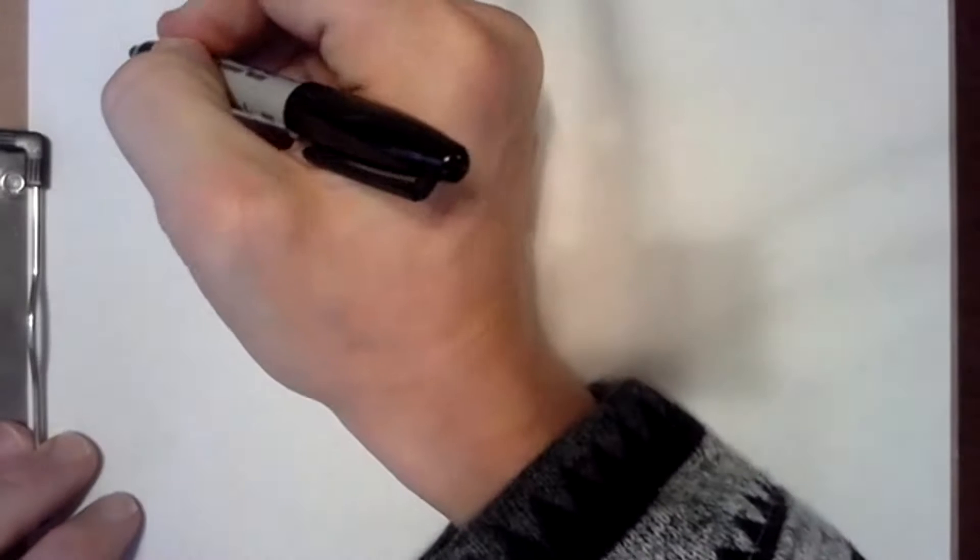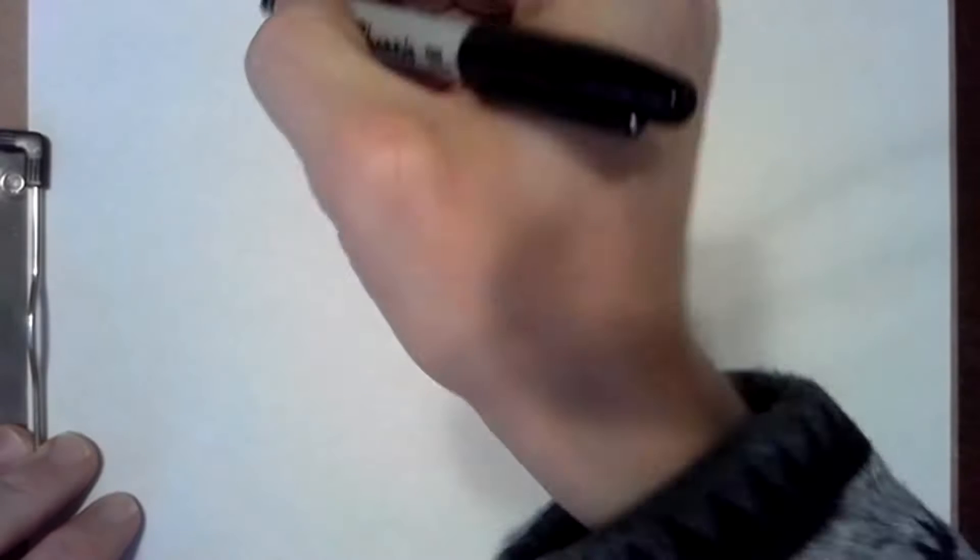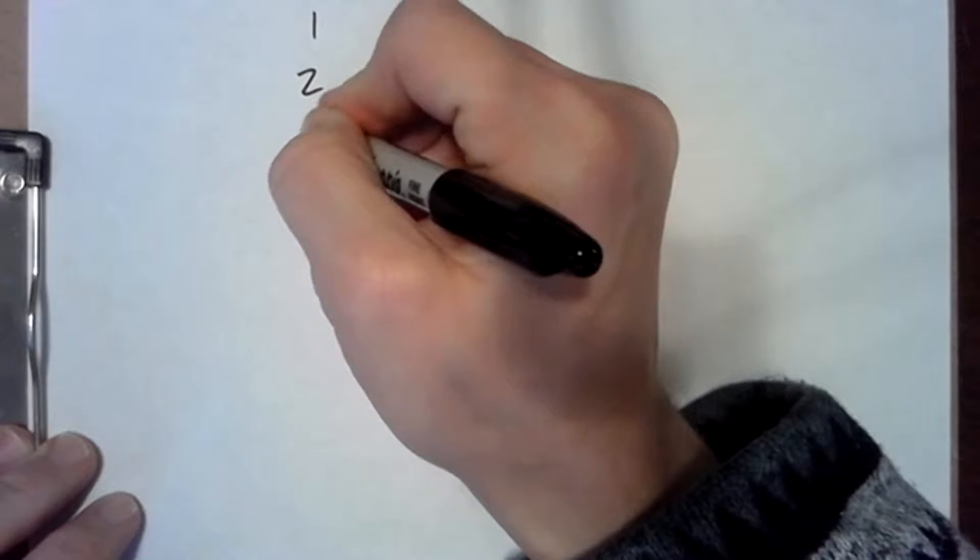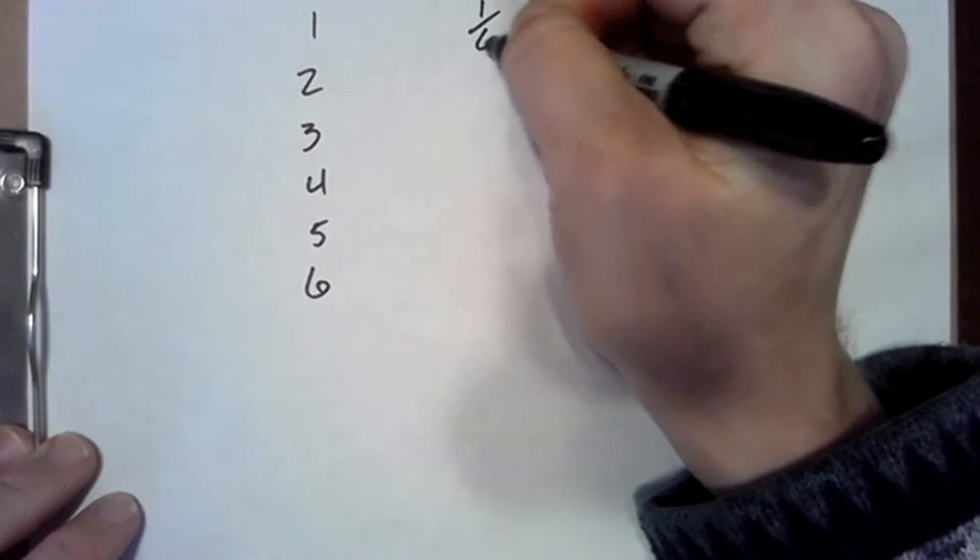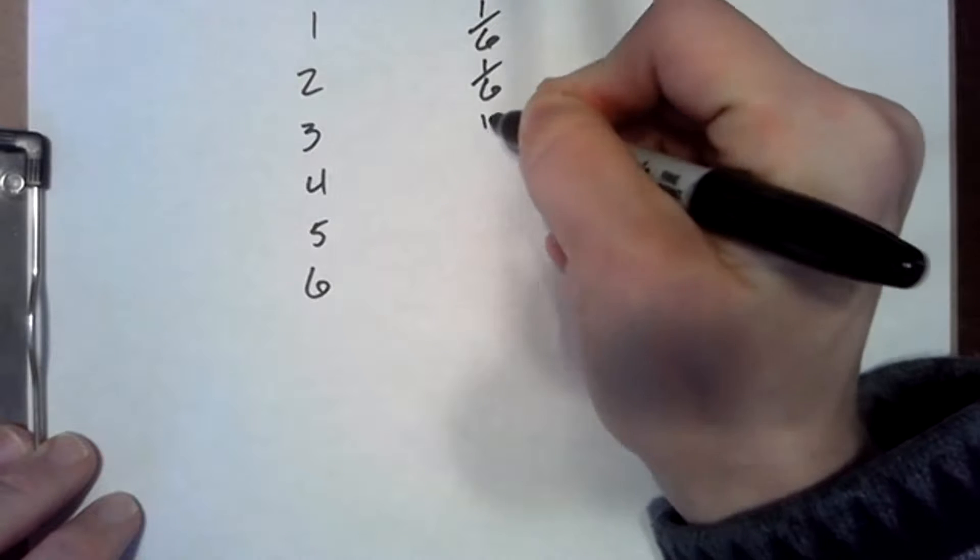Well, the probability distribution of this experiment is pretty simple because we've got six options and each are equally likely since it's a fair die. One, two, three, four, five, six are our options, and each of them has a probability of one sixth.